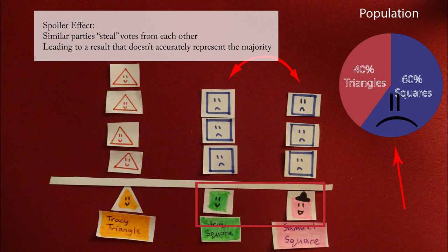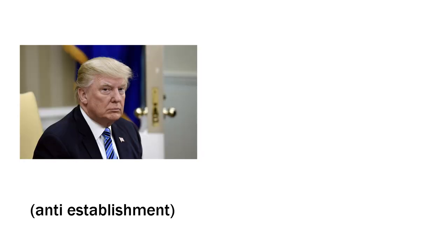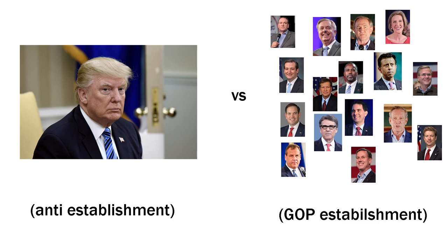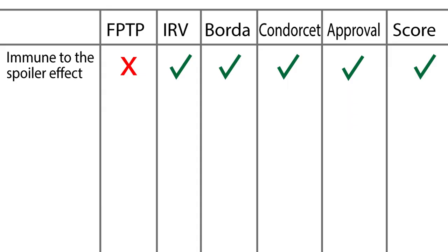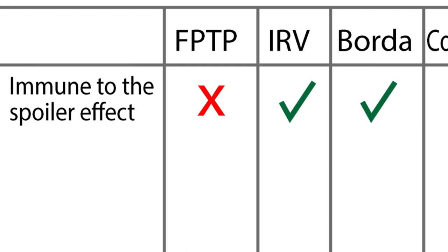A real-life example of this happened in 2016, when Trump, one anti-establishment nominee, ran against 16 GOP establishment nominees who all stole votes from each other, letting Trump win the Republican primary easily. Note that out of the six most popular voting systems, First Past the Post is the only one that falls victim to the spoiler effect.